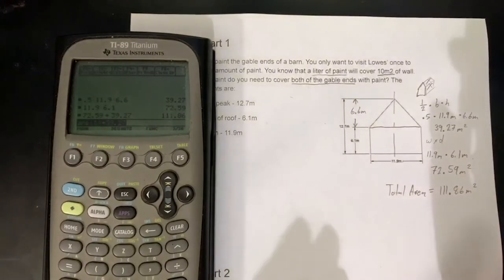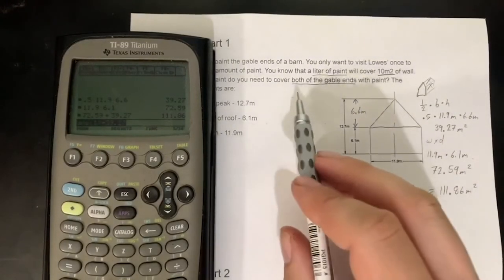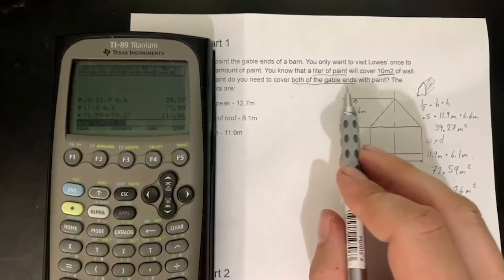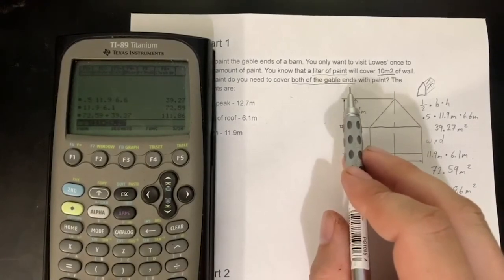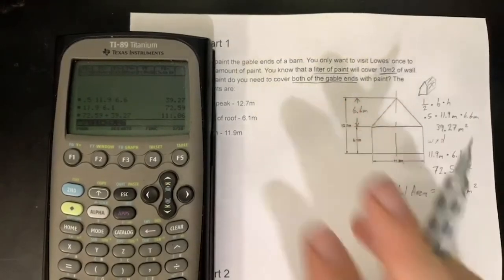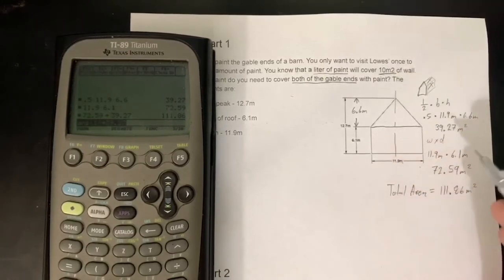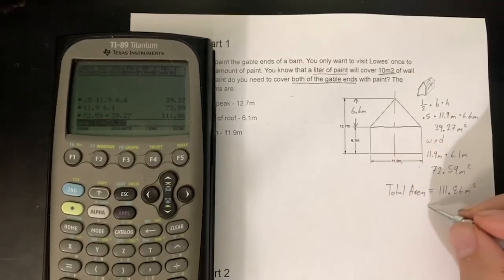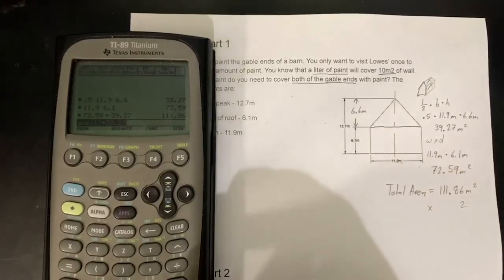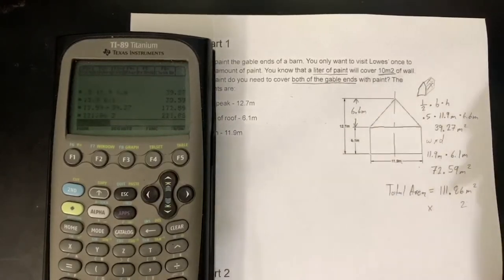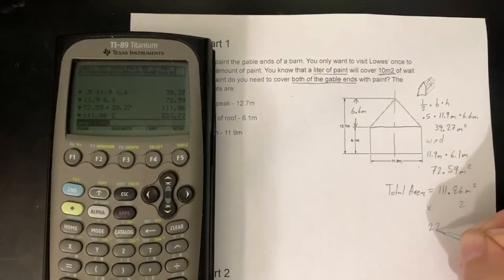And we have a total area equal to 111.86 meters squared. Now the trick here is not forgetting that we have both of the gable ends to take care of. So as tempting as it may be to round that off, change it to the liters needed for 10 meters squared of wall, we do want to go ahead and double that now. So times 2, and we should be getting 223.72 meters squared.